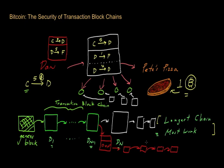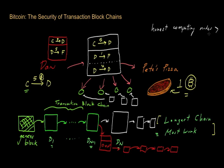So the key metric here is how much computing power Dan has versus how much computing power all the honest nodes in the system have together. By honest computing power, I mean the total computing power for all the Bitcoin mining nodes who are honest in the network.